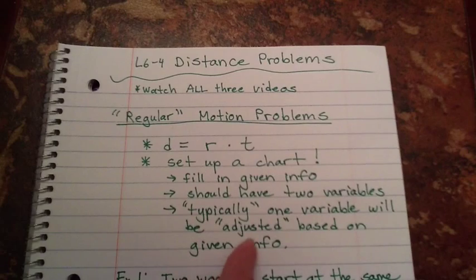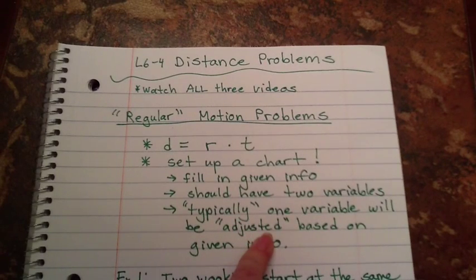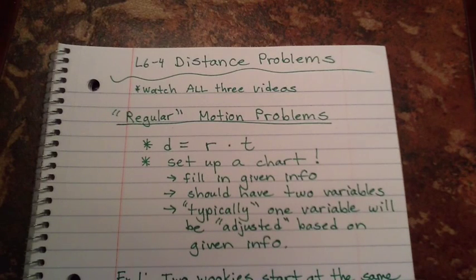Then one of those two variables is usually going to have some kind of adjustment on the given info, which again I'll go over. Write this down. Hit play when you're ready to write example one down.